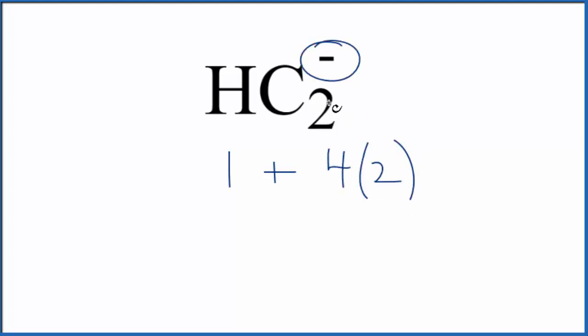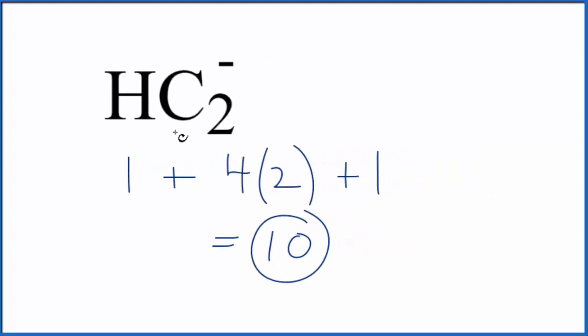This negative up here means we have an ion, it'll be an anion. That means we have one extra valence electron. We add these up 1 plus 8 plus 1, 10 total valence electrons for HC2 minus.